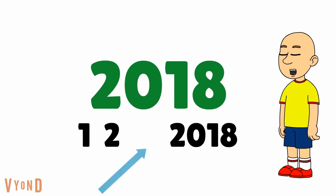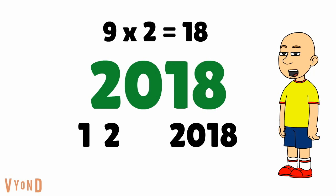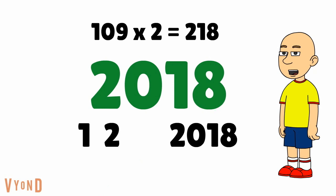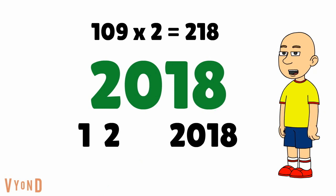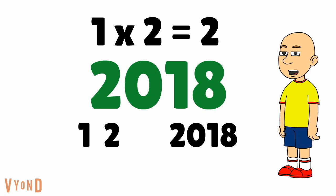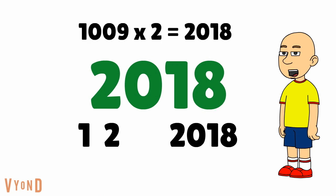We need to figure out what that number is. We all know that 9 times 2 equals 18. But then if that's so, then 109 times 2 equals 218, since 1 times 2 equals 2. And if you add a 0 in each number, then it will be 1009 times 2 equals 2018.